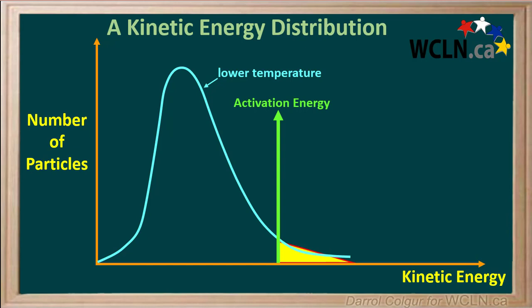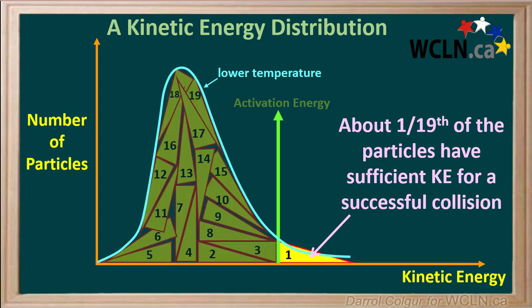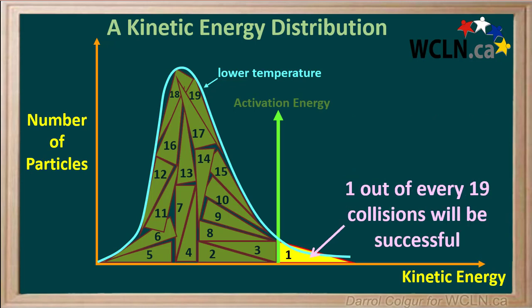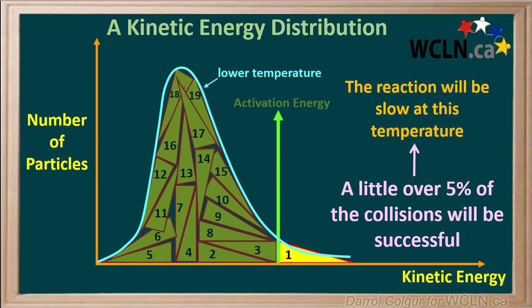Let's see how many of these triangles fit under the whole curve. We'll call the first triangle number 1, and add enough triangles to approximately fill the area under the whole curve. These 19 triangles represent the total population of particles in the sample. We see that only 1/19th of the particles have sufficient energy for a successful collision, or only about 1 out of every 19 collisions will be successful. 1 over 19 works out to a little over 5%, so only a little over 5% of the collisions will be successful at this low temperature, meaning the reaction will be slow.